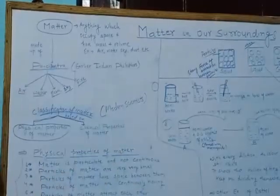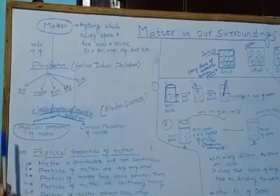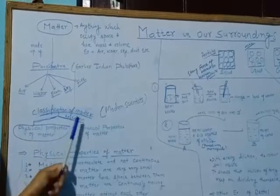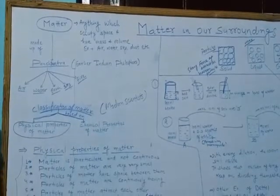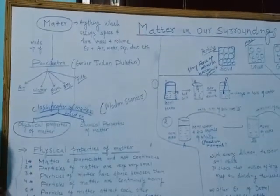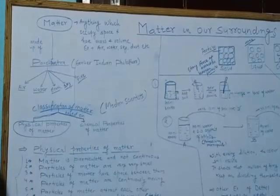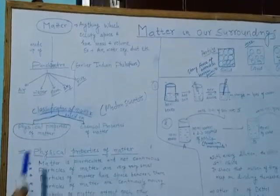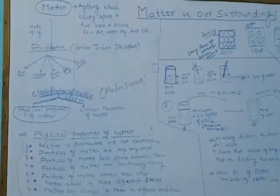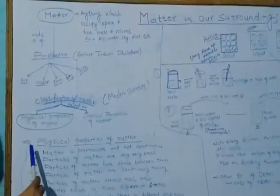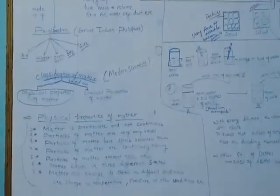According to modern scientists, the classification of matter can be based on the physical properties of matter and the chemical properties of matter. So basically, in this chapter you have to study about the physical properties of matter.